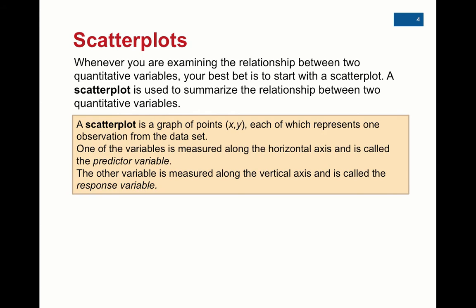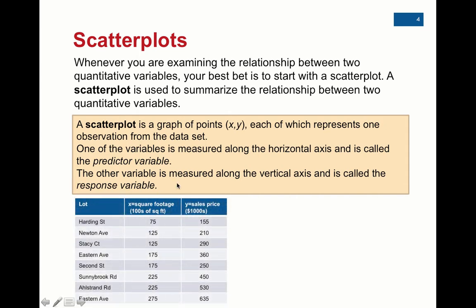Scatterplots are a graph that show you the possible relationship between two variables. Let's say we wanted to look at the relationship here between the square footage of a house and the sales price in the thousands. We would make a graph here called the scatterplot. The key thing is that scatterplot is just like graphs from algebra, where we have the x-coordinate and the y-coordinate.